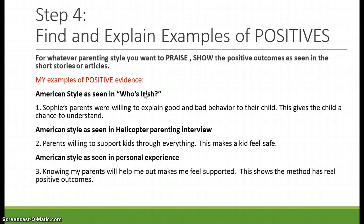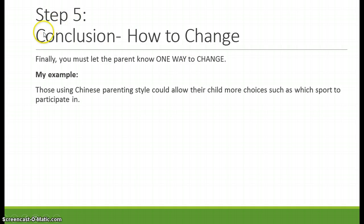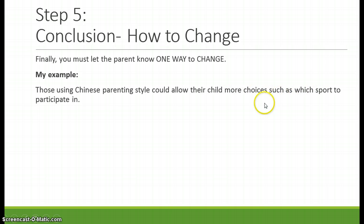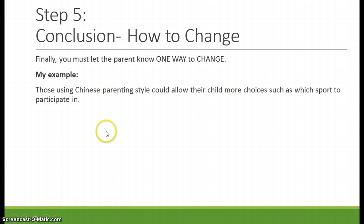The last step is showing how to change. My example was: those using the Chinese parenting style could allow their child more choices, such as which sport to participate in. I might talk about how things would turn out differently with Amy Chua if she had just given her child a choice rather than controlling what she should do.